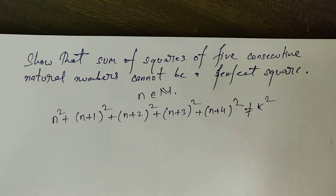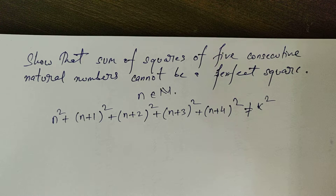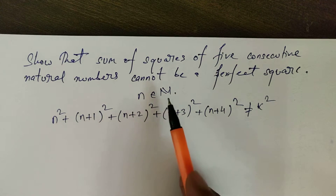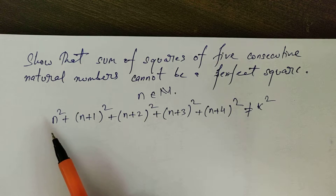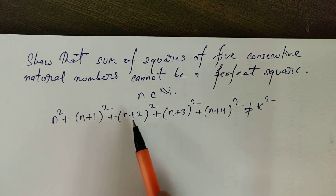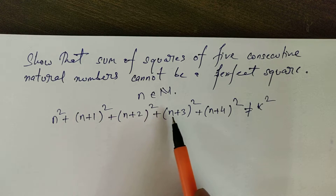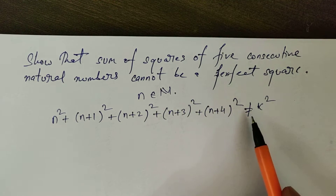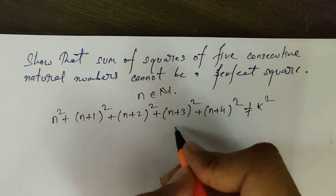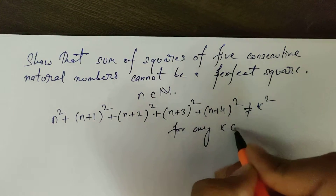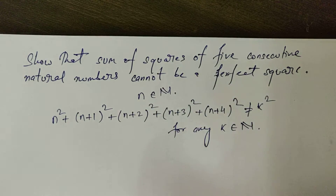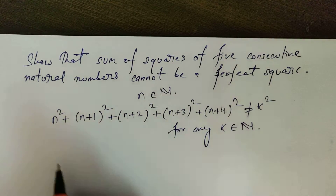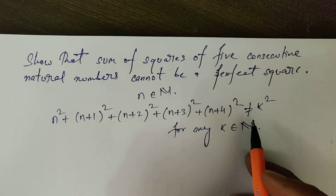What we have to show here is that the sum of squares of 5 consecutive natural numbers cannot be a perfect square. So for any n belonging to the naturals, n² + (n+1)² + (n+2)² + (n+3)² + (n+4)² will never equal k² for any k belonging to the set of naturals.